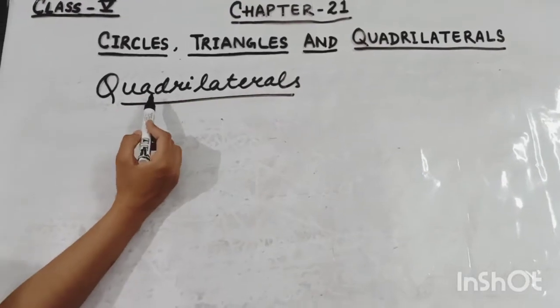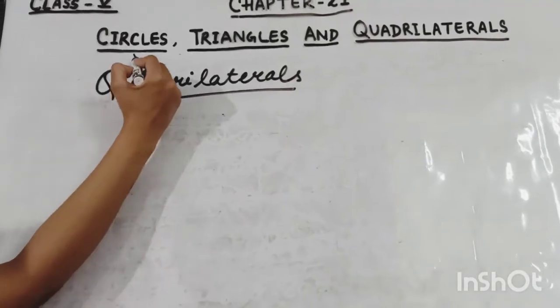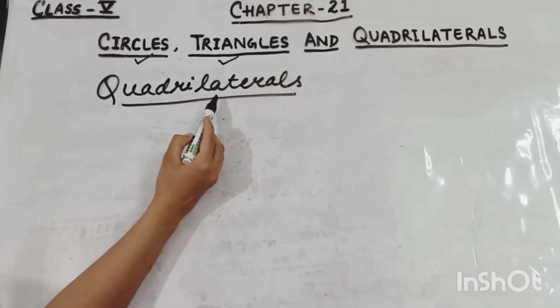Hello dear students, welcome back. Today we are going to talk about quadrilaterals and we are continuing our chapter number 21. In this video we will talk about the quadrilateral as well as all the four types of quadrilaterals. We have completed circles and triangles. Now we come to quadrilaterals.